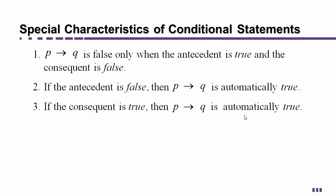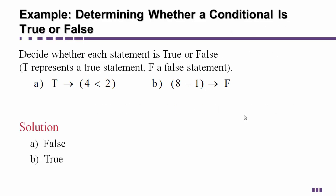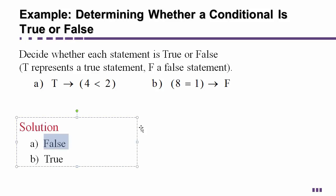This discusses the special characteristics of the conditional statement — when it's true and false. Remember that capital T always represents a true statement and capital F always represents a false statement. For example, if the first statement is false and the second statement is true, and the second statement is obviously false because 4 is not less than 2, that's the one case where the statement is false. Here, '8 equals 1' is obviously false implying false — false implies false — and since we didn't even test it, it's assumed true.